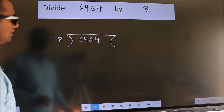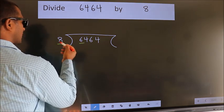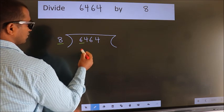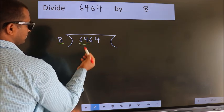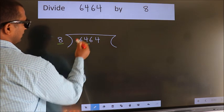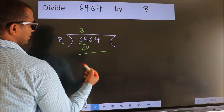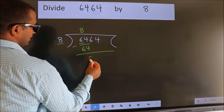Next, here we have 6, here 8. 6 is smaller than 8, so we should take 2 numbers: 64. When do we get 64? In the 8 table. 8 times 8 is 64. Now we subtract and get 0.